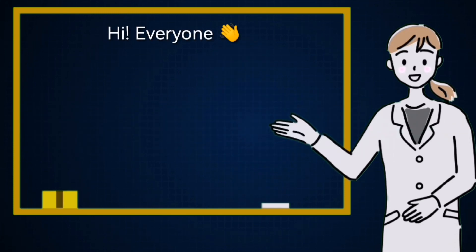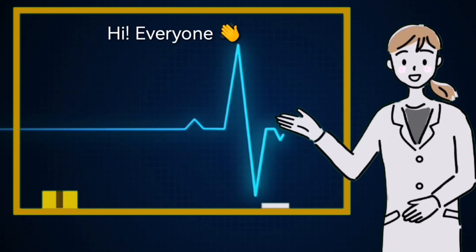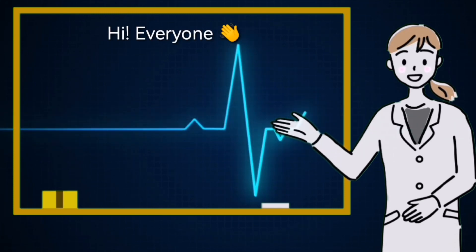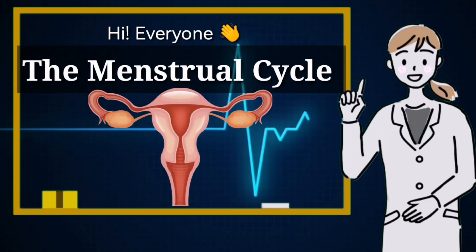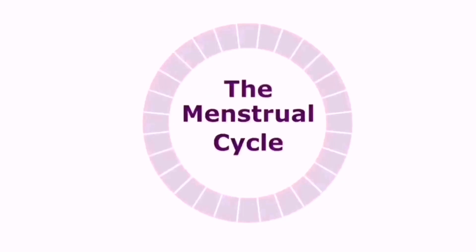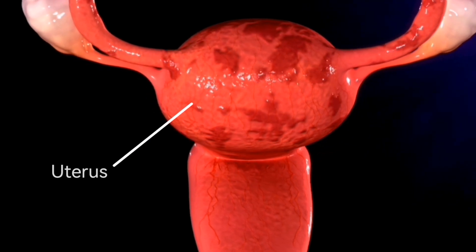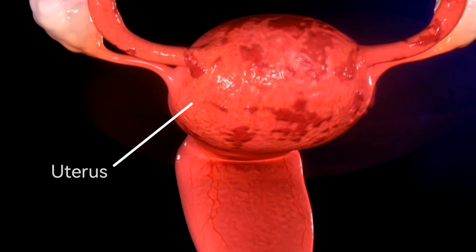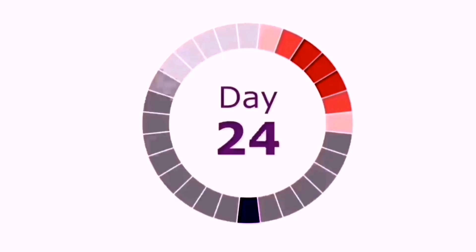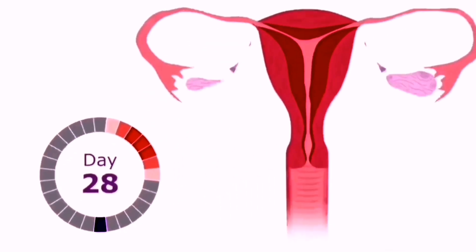Hi everyone and welcome back to my channel. Today we are going to talk about the menstrual cycle. The menstrual cycle is a monthly process that occurs in the female body where the uterus prepares itself for pregnancy. It usually lasts for about 28 days but can vary from person to person.